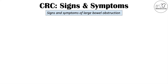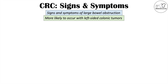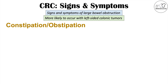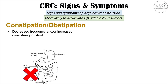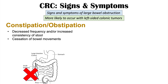Signs and symptoms of a large bowel obstruction can also occur, and this is more likely with a left-sided colon tumor. Constipation — decreased frequency or increased consistency of stool — is part of the altered bowel habits. If the tumor has grown large enough to completely block the lumen of the large intestine, nothing can pass. There will be a cessation of bowel movements, and there may even be obstipation — no passing of flatus — as the complete obstruction allows no stool or flatus to pass.